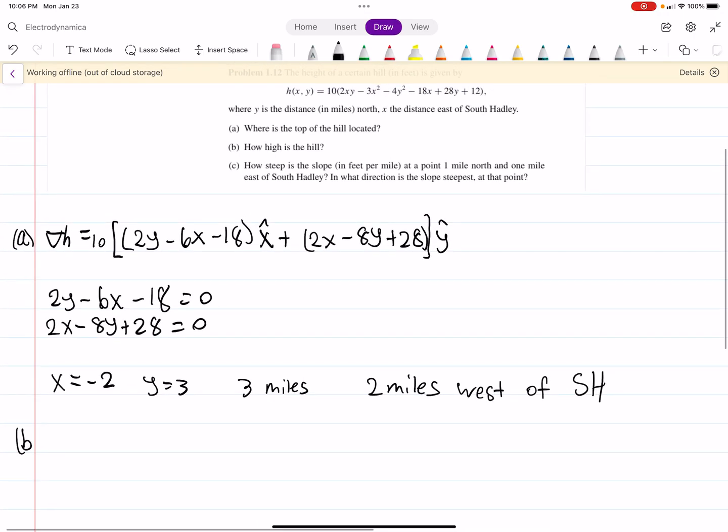Part B, how high is it? Well that's easy. Now that we have this, we can simply plug in what we just found, and that should be a negative because it's a negative 2. And when you plug that in, you get 720 feet.